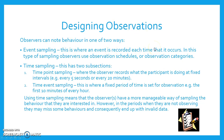Observers can note behavior in one of two ways. Event sampling is where an event is recorded each time that it occurs. In this type of sampling, observers use observation schedules or observation categories.